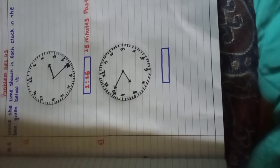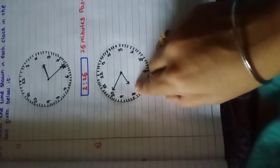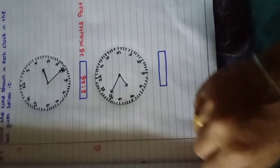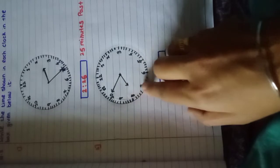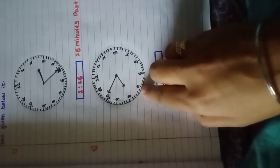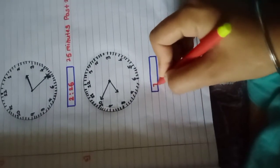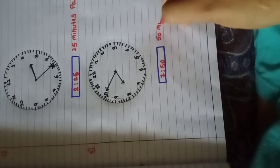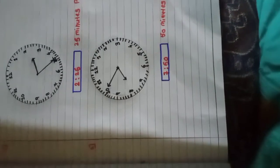Now we will see the second example. See here in the second sum. The minute hand is on the 10 and the hour hand is between 7 and 8. At 10 it is 50 minutes. So the hour hand is on the 7, so 50 minutes past 7, or I can write it as 7:50.